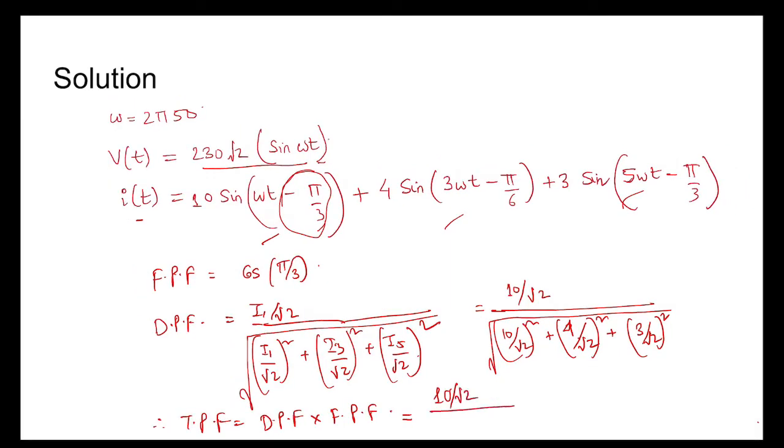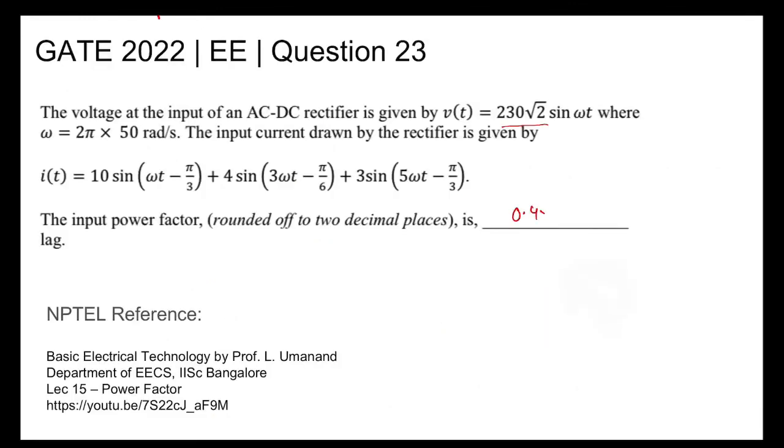Which is coming out as (10/√2) divided by √(125/2), into cos(π/3). So √2 gets cancelled, and this is coming out as 0.45 lag. The answer is 0.45 lag.